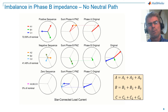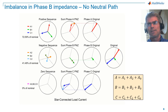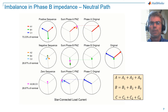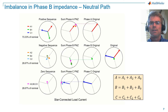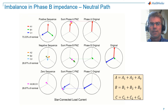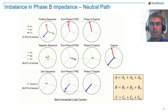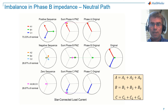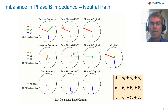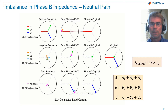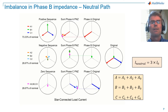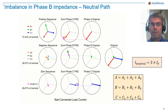Now we'll look at what happens when we have a neutral path in an imbalanced system. You can see in our left column that we now have a zero sequence component. Note that the three zero sequence components for each phase are overlaid. What this actually shows us is that a single phase current flows through the neutral path, with the phase being equal to the zero sequence phase, and a magnitude equal to three times the zero sequence magnitude. In the middle column, we add the sequence vectors to reconstruct the original vectors, and we can see that the reconstructed vectors match the original vectors.